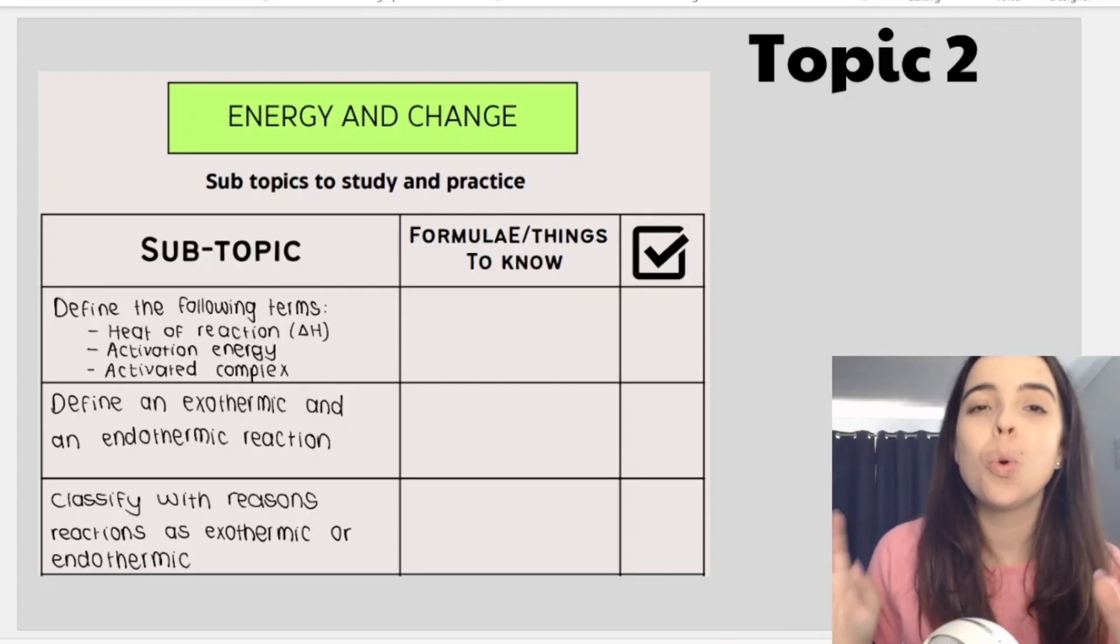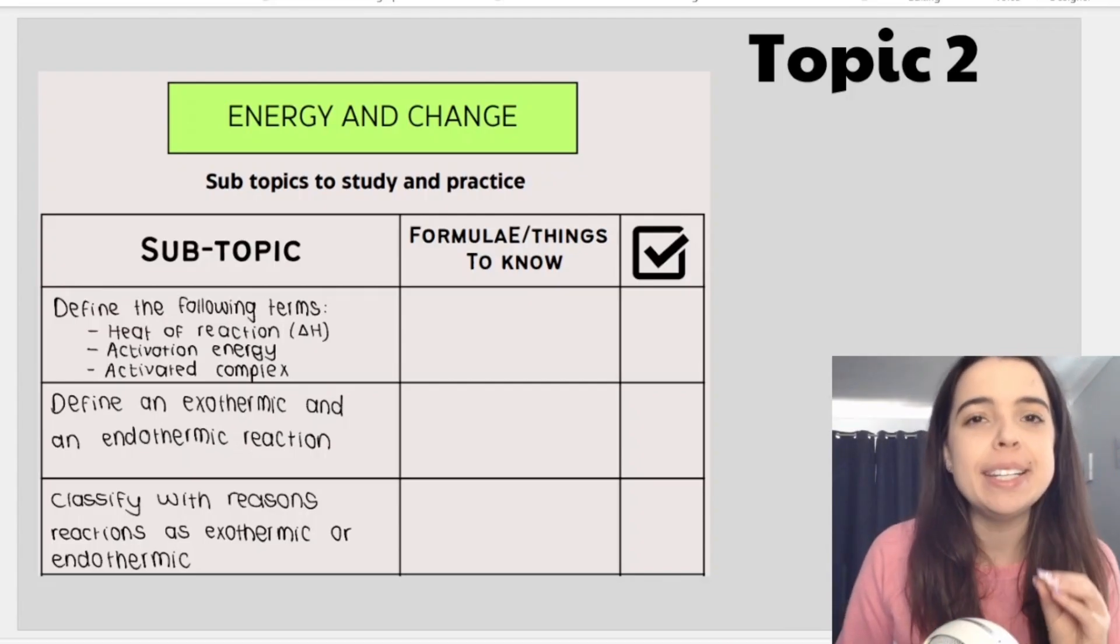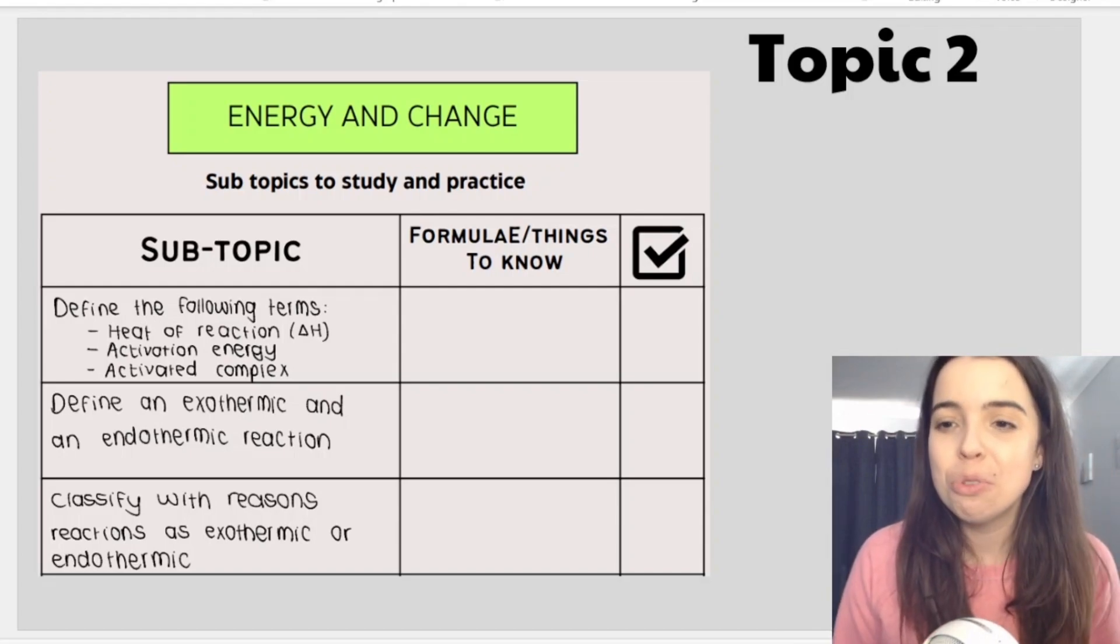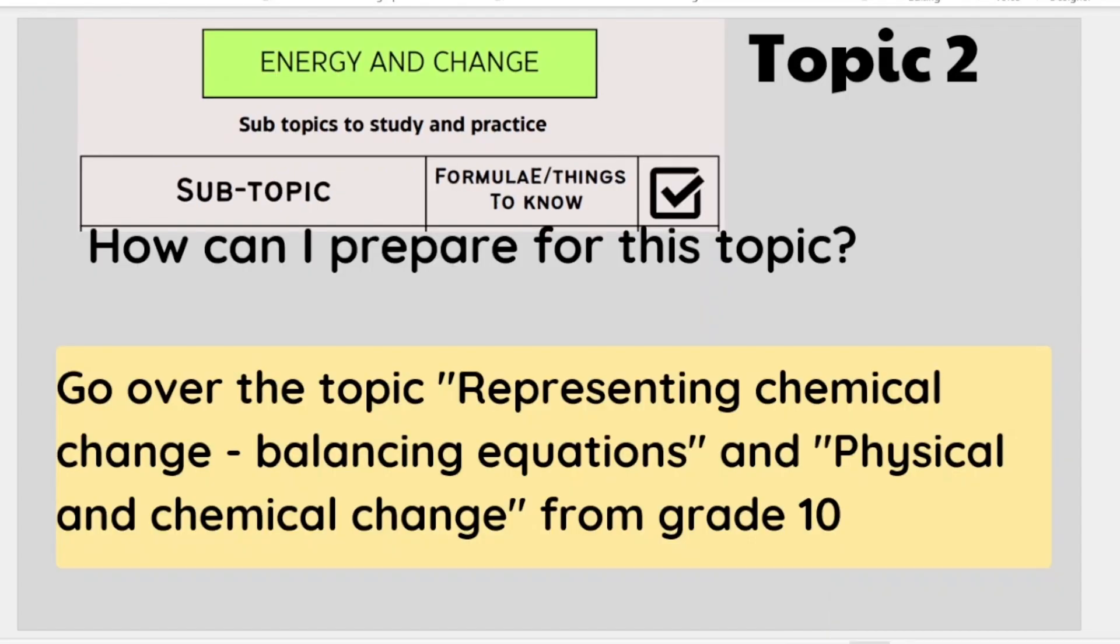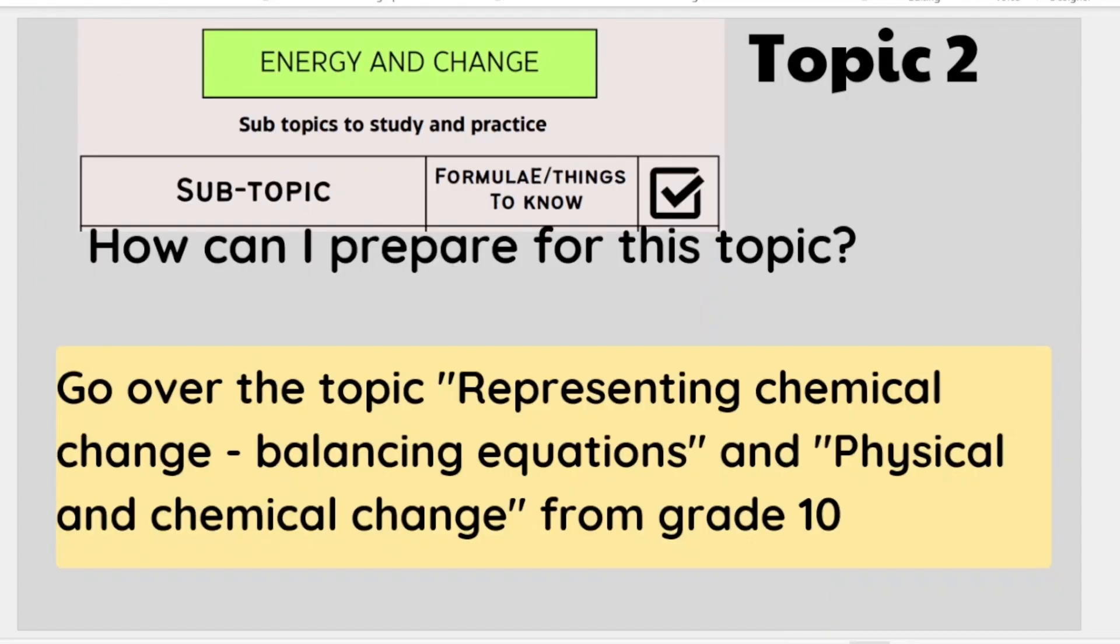Topic two is called energy and change and you'll be dealing with exothermic reactions and endothermic reactions. This may be familiar to you. Some teachers may or may not mention this in grade 10 already. So to prepare for this topic I would go over representing chemical change and that includes balancing chemical equations and also physical and chemical change from grade 10.